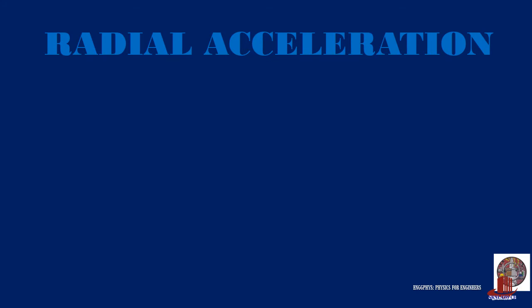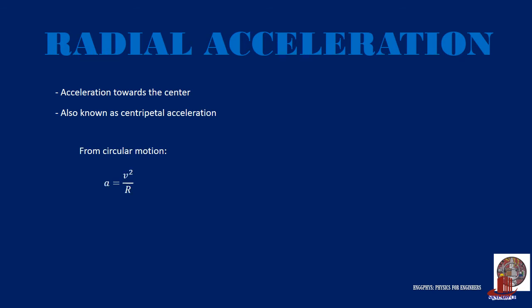We also have radial acceleration, which is the acceleration drawing the object toward the center — you have been introduced to this as centripetal acceleration. Starting from its formula in circular motion as v² over r, and knowing that v equals r·omega, we substitute to get (r·omega)² over r, which simplifies to r·omega², given in meters per square second.